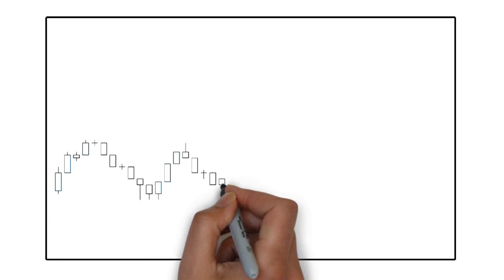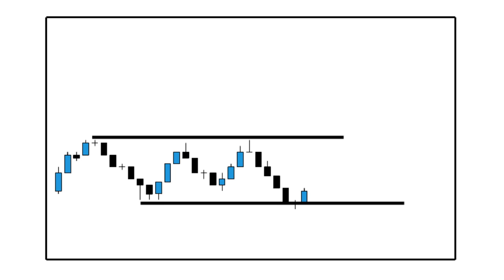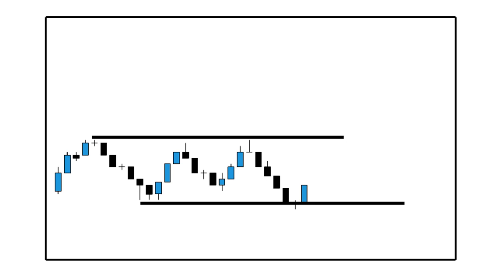As this is a bullish reversal signal, we will only look for it in a downtrend. As you can see, the first candle in this pattern is a bearish continuation, the second candlestick shows that the bearish momentum is slowing down, and only the third candlestick is an actual reversal signal. This signal gets stronger if the third candlestick is a bullish engulfing candle, meaning it closes above the first candlestick's open price.